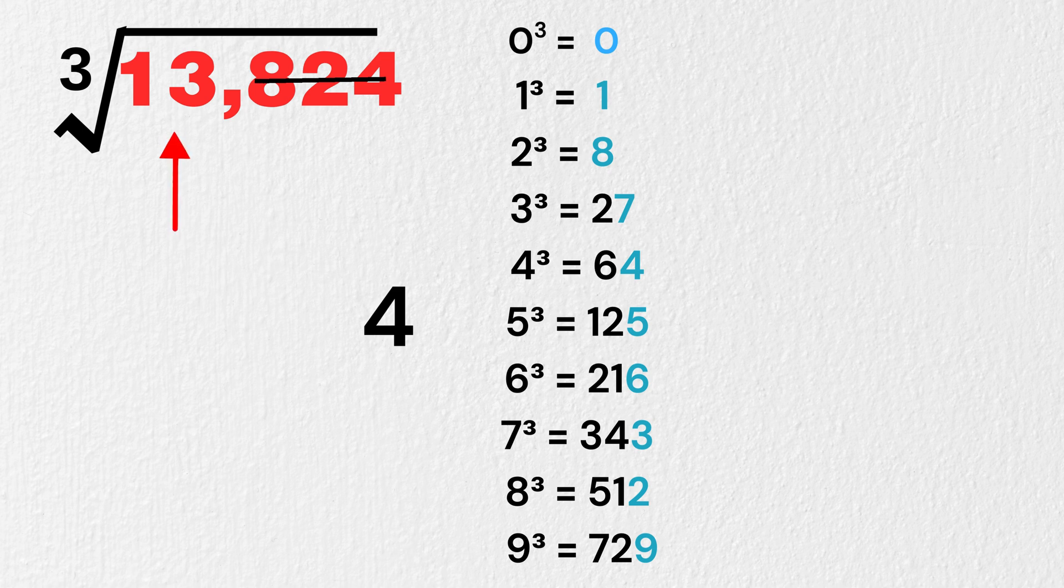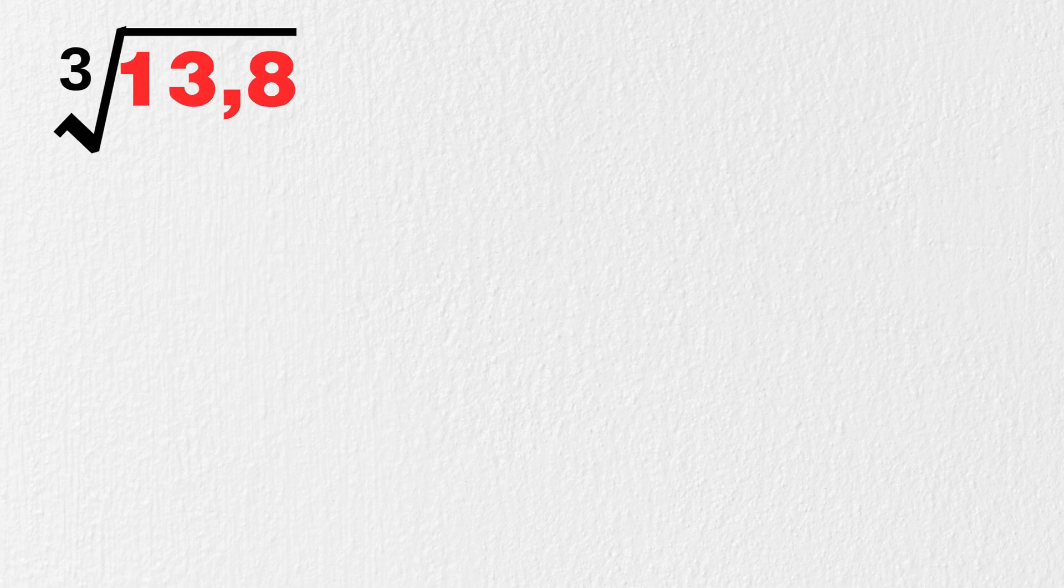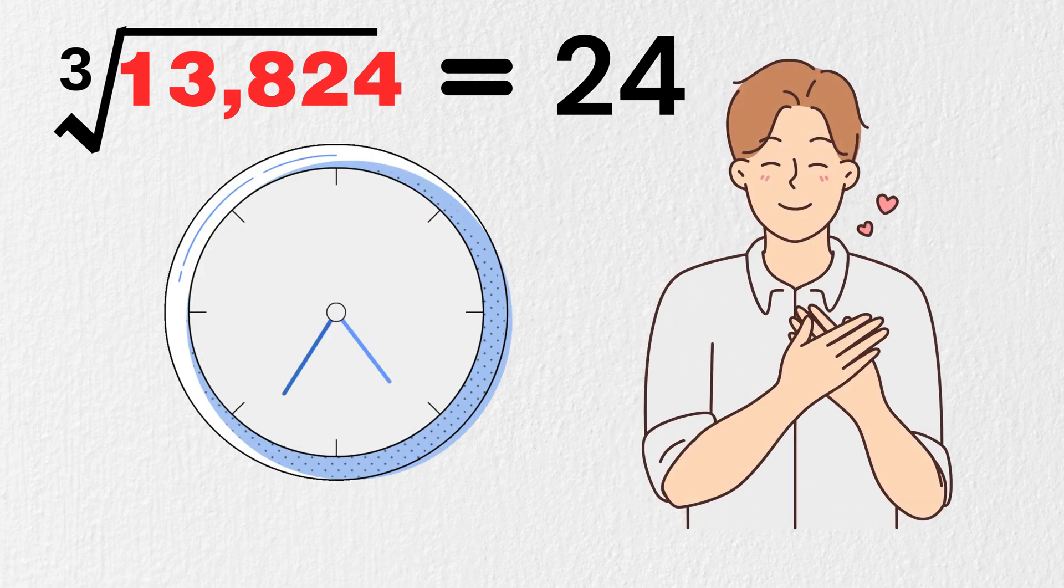Finally, we want a cube which is just less than or equal to 13. That is number 8, which is 2 cube. So, we write 2 here. Our answer is cube root of 13,824 is 24. Wow! Just done in few seconds. Isn't it magic, right?